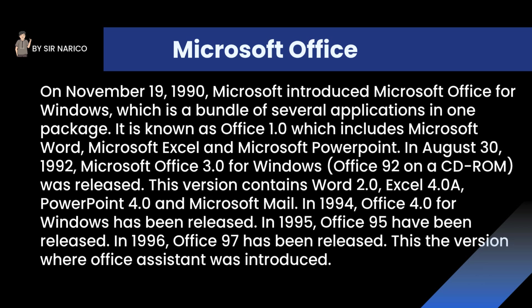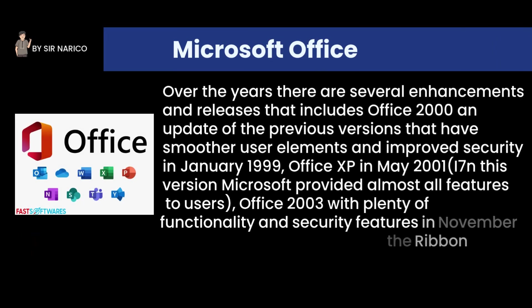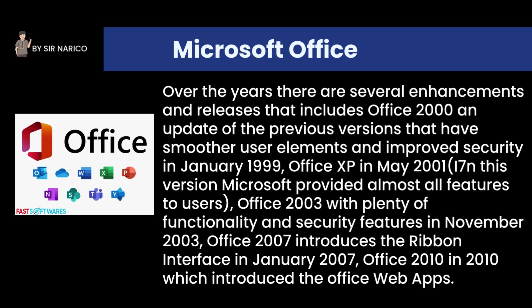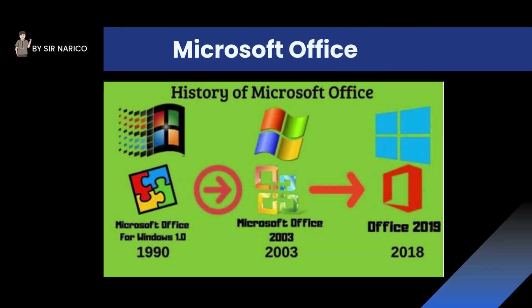In 1994, Office 4.0 for Windows was released. In 1995, Office 95 was released. In 1996, Office 97 was released — the version where the Office Assistant was introduced. Over the years there were several enhancements and releases, including Office 2000 with smoother user elements and improved security in January 1999, Office XP in May 2001 where Microsoft provided almost all features to users, Office 2003 with plenty of functionality and security features in November 2003, Office 2007 which introduced the Ribbon interface in January 2007, and Office 2010 which introduced the Office Web Apps.